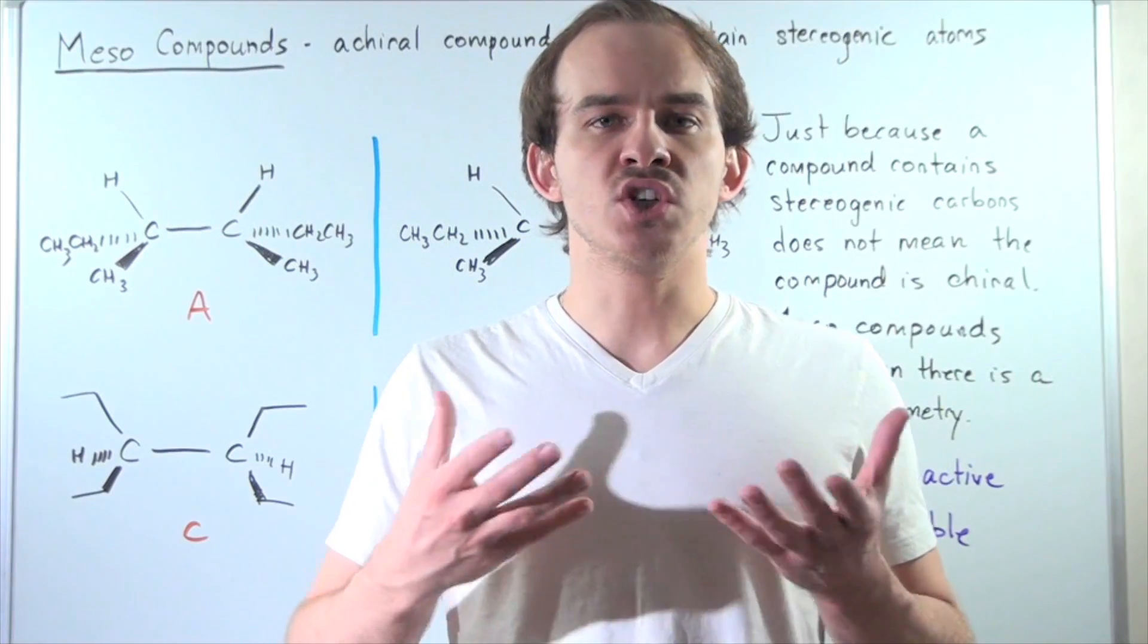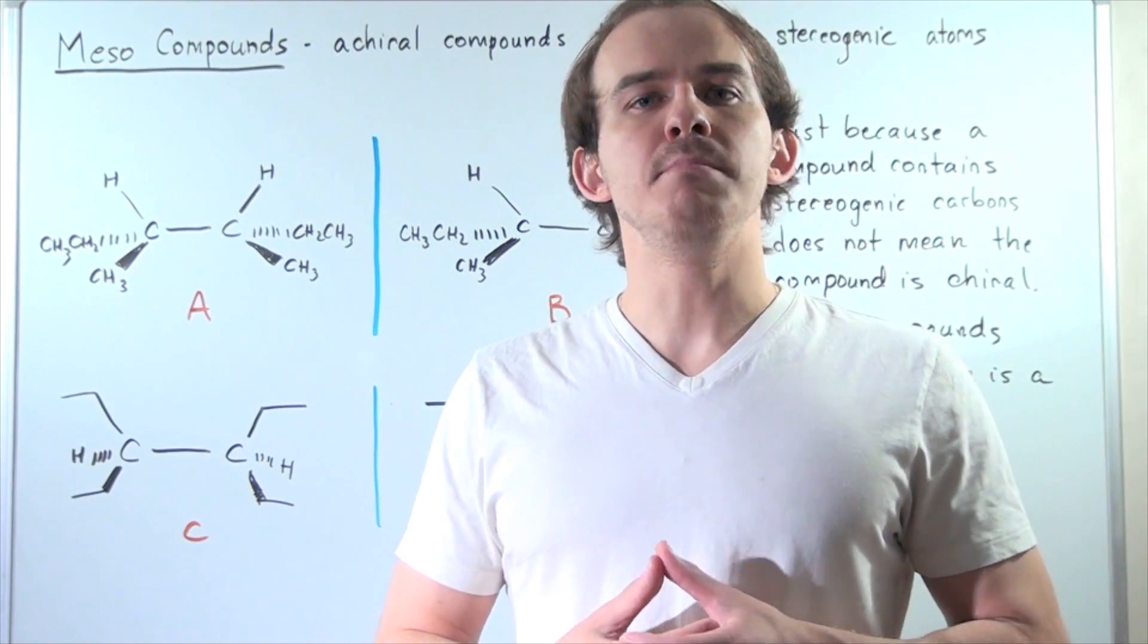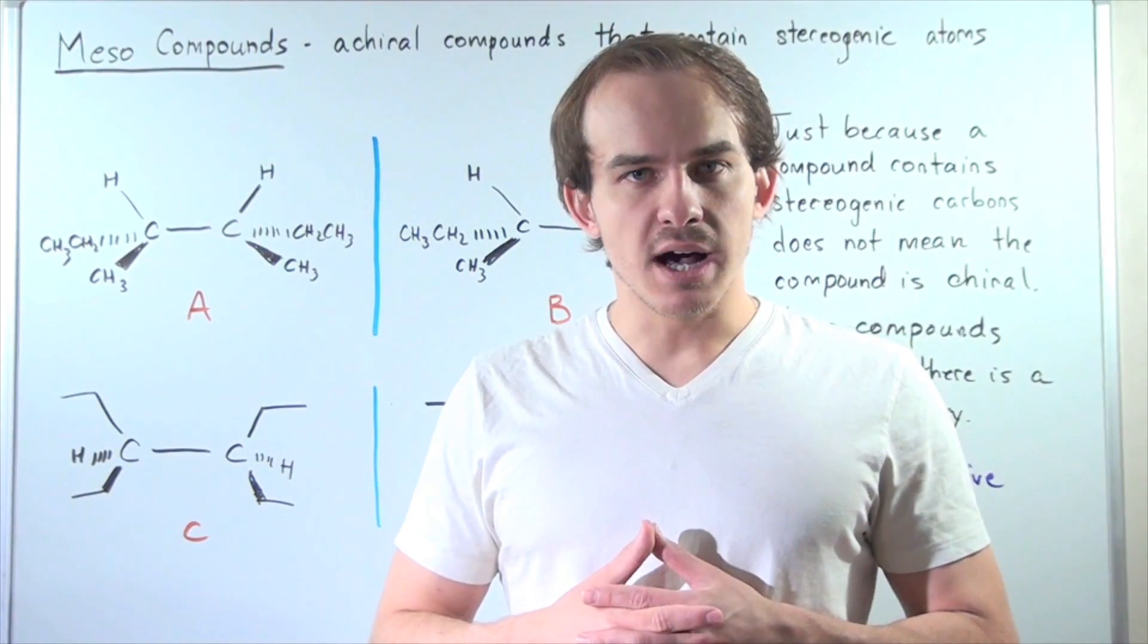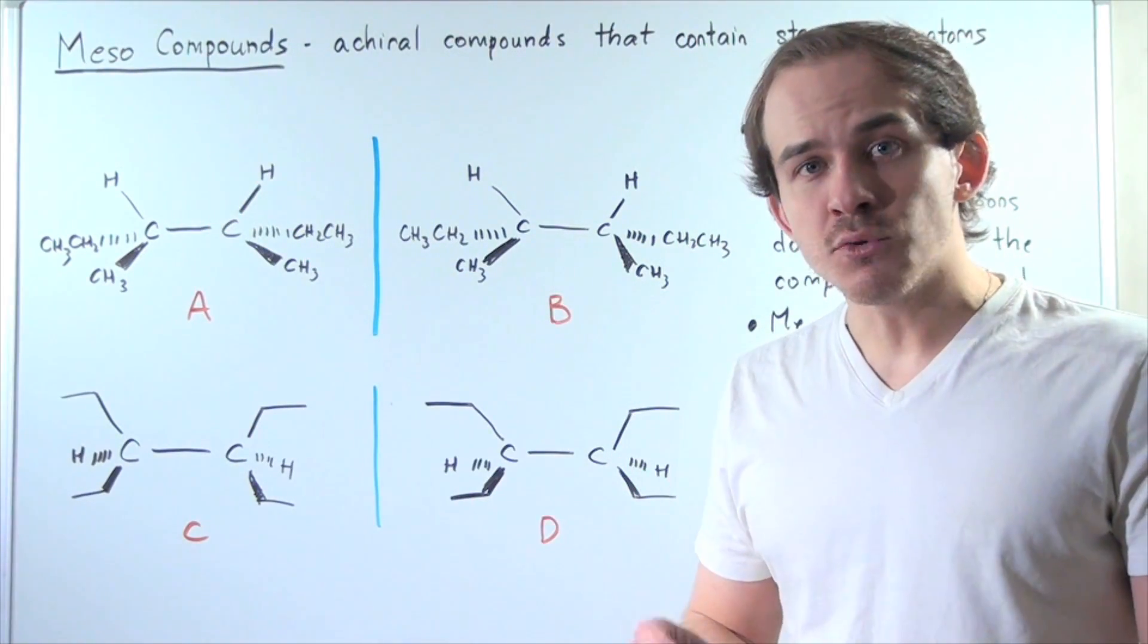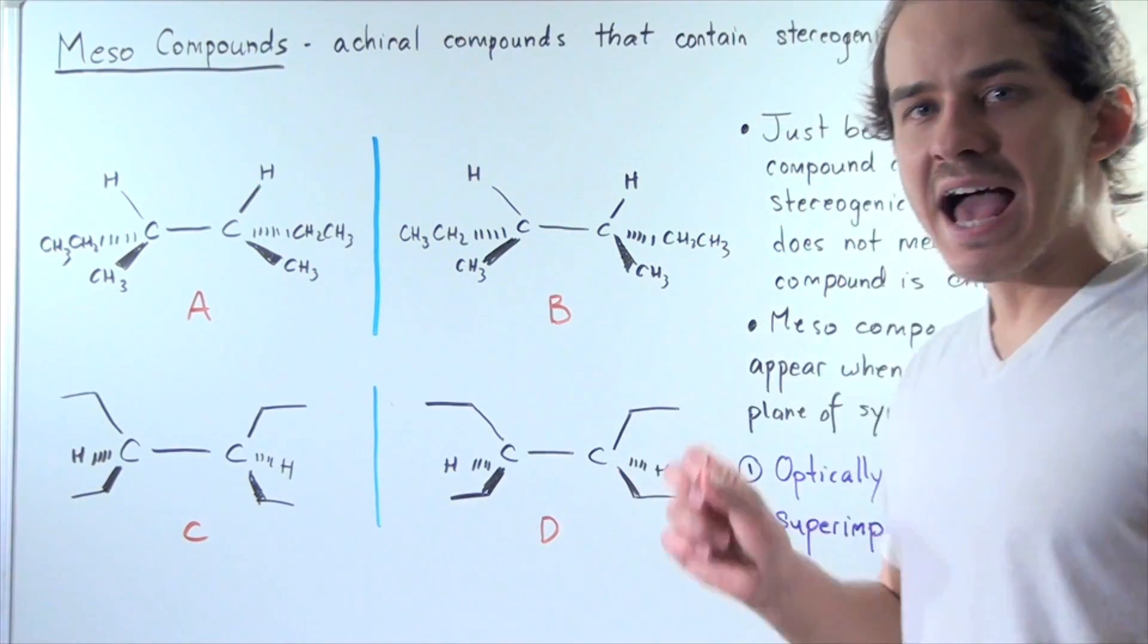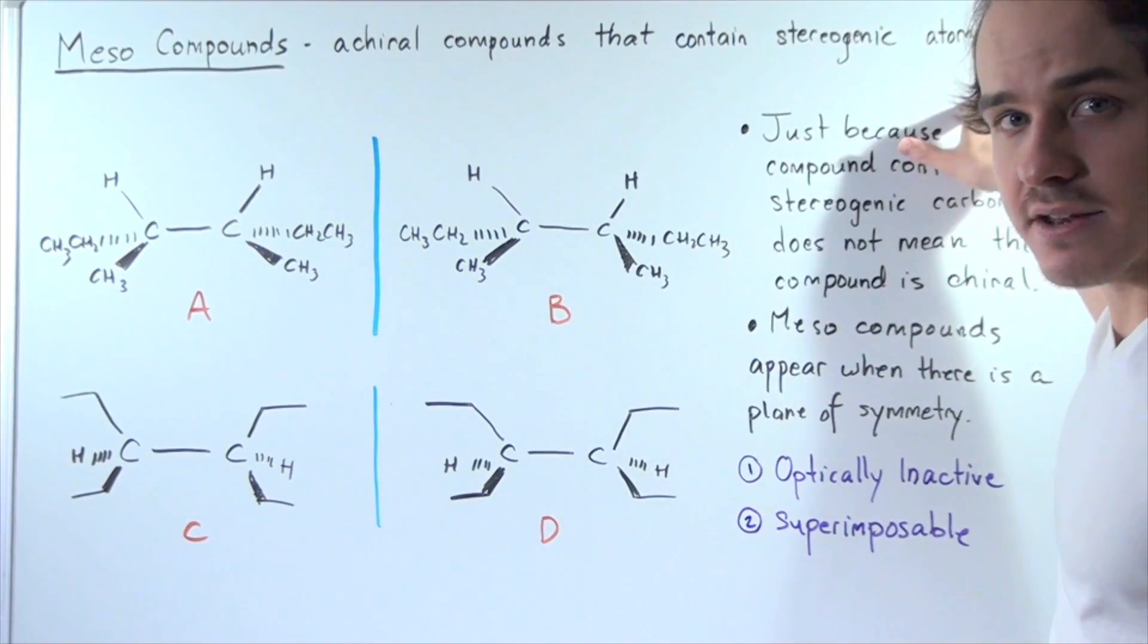In this lecture, we're going to talk about a special type of compound known as the mesocompound. Mesocompounds are simply achiral compounds that have stereogenic atoms.